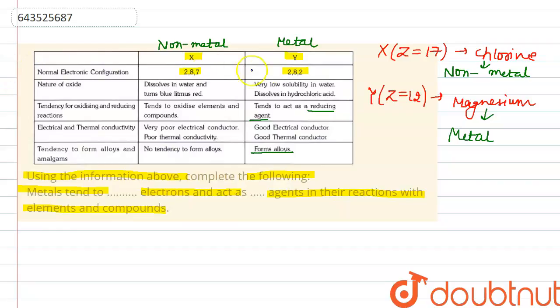As in this case also we can see, in case of magnesium it tends to donate two electrons to form Mg2+ ion. Why? Because it has the electronic configuration 2,8,2. If it will donate two electrons, it will get the configuration 2,8, which is a stable noble gas configuration.